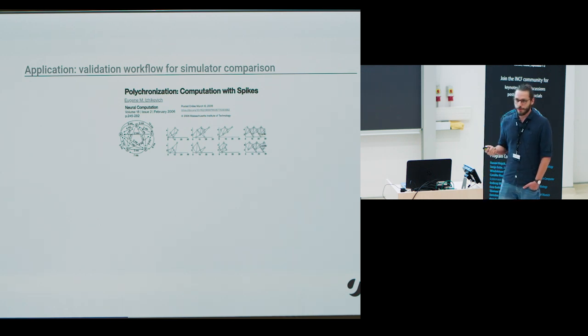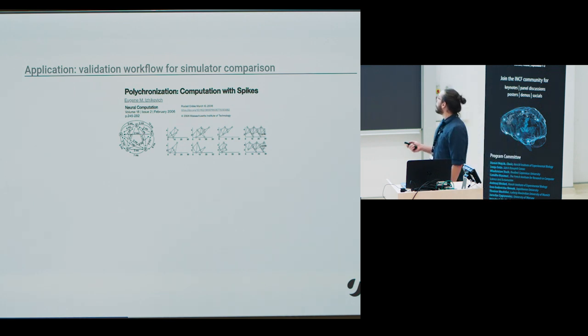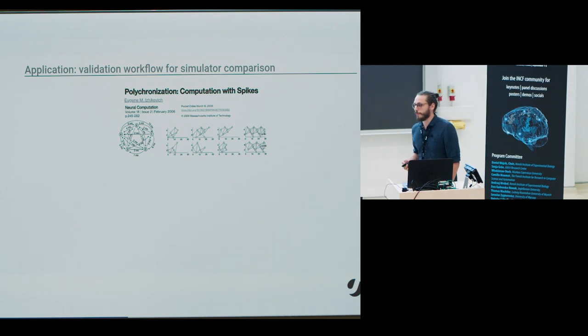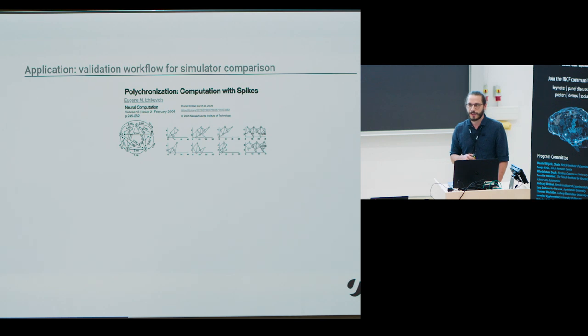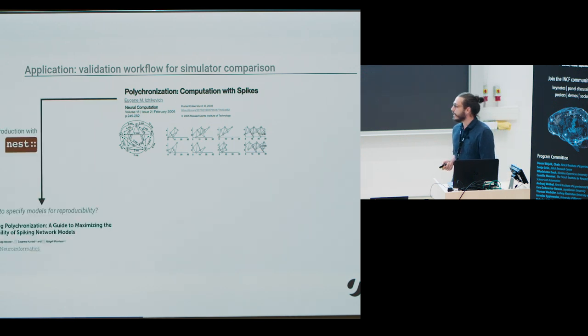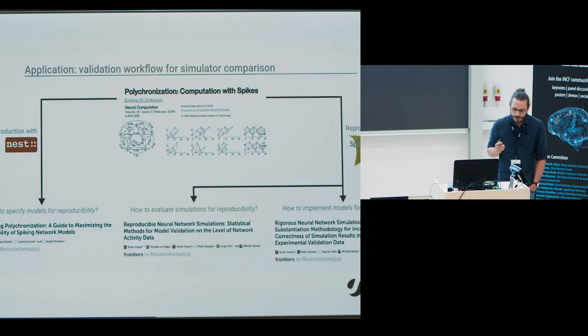Okay, let's jump directly to a real-world application. So, this is in the context of a reproducibility study of the polychronization model, which was published in 2006 by Izhikevich. And this model is interesting for at least two reasons. The first one is it produces a very rich network dynamics of spatially, temporarily organized, and repeating spike patterns. But the second reason is arguably more important. Izhikevich actually published also his code, which made it possible to reproduce it. So, the first study focused on the exact reproduction of this model, here using the engine NEST. This was work by Pauline Weidel, and they discussed the model specifications which are necessary to actually do such an exact reproduction.